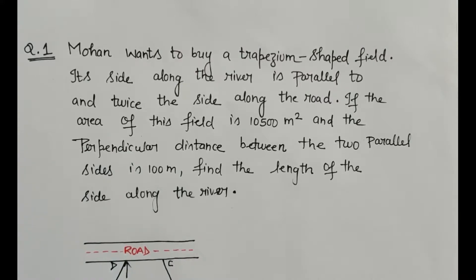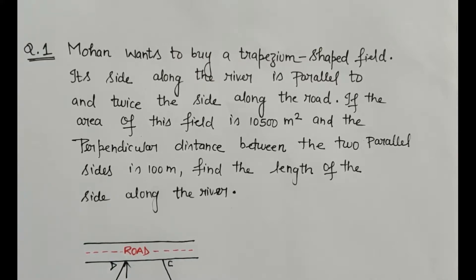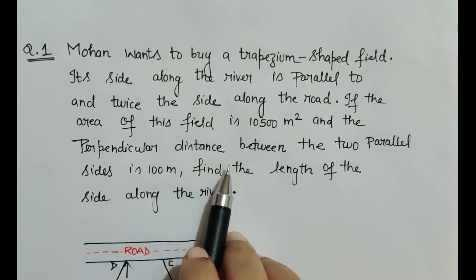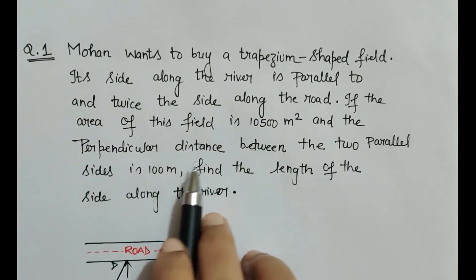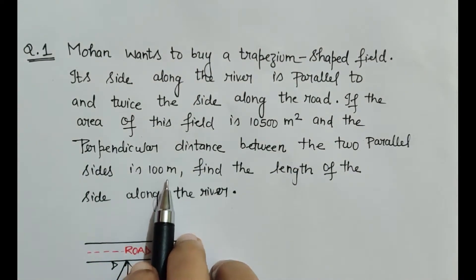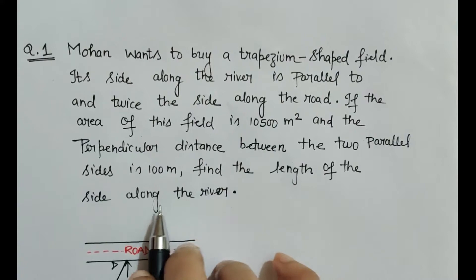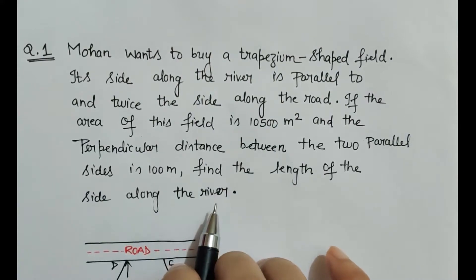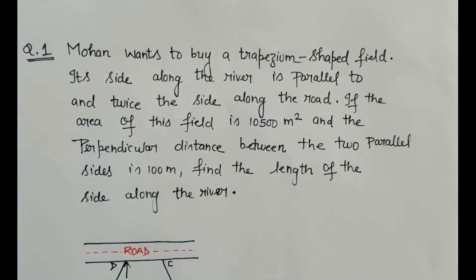The question is: Mohan wants to buy a trapezium-shaped field. Its side along the river is parallel to and twice the side along the road. If the area of this field is 10,500 square meters and the perpendicular distance between the two parallel sides is 100 meters, find the length of the side along the river.